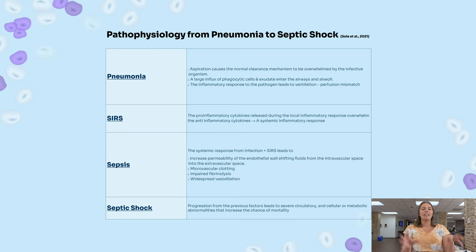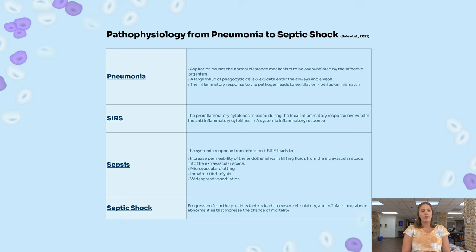The pathophysiology that leads from pneumonia to septic shock is a little complex. Starting with pneumonia: aspiration causes the normal clearance mechanisms to be overwhelmed by the infective organism. A large influx of phagocytic cells and exudate enter the airways and alveoli, and the inflammatory response leads to a ventilation-perfusion mismatch. Then you have SIRS, a progression from the infection where pro-inflammatory cytokines released during the local inflammatory response overwhelm the anti-inflammatory cytokines, leading to a systemic inflammatory response. The systemic inflammatory response plus the infection then leads to increased permeability of the endothelial wall, shifting fluids from the intravascular to the extravascular space. It can also cause microvascular clotting, impaired fibrinolysis, and widespread vasodilation.